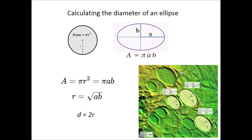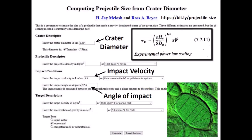The program to calculate projectile size from crater diameter assumes that the crater is circular. By equating the area of a circle to the area of an ellipse, we find that the equivalent radius of the ellipse is the square root of the product of its semi-major and semi-minor axes. The diameter of the ellipse can then be used to calculate the projectile size. Professor Jay Meloche and Ross Beyer developed a program to calculate projectile size from crater diameter based on yield equations relating energy to crater size. The program requires the crater diameter, the impact velocity, the angle of impact, and information about the physical characteristics of the projectile and the target material.